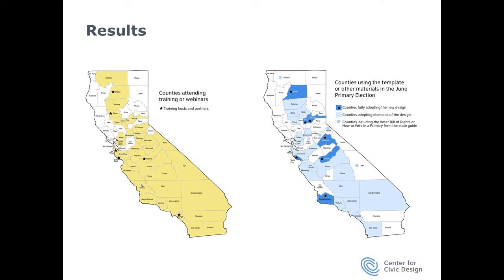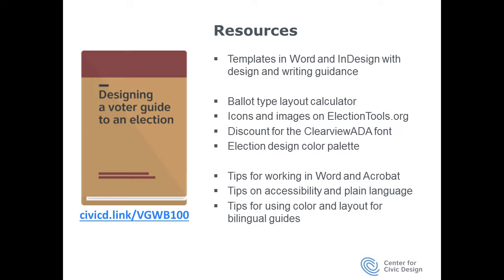All of this is online in a whole bunch of resources. There are templates up there, the ballot type layout calculator, and all of the icons and images are now on electiontools.org, where they're available to everybody. We've arranged for a discount on the font we think is really nice. The election design color palette is there in accessible color combinations so it meets accessibility requirements. And there are key tips on working in Word and Acrobat, on accessibility, plain language, using color, and ideas for layout for bilingual guides. We hope those will help anybody who's looking to do more.